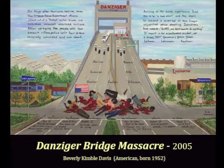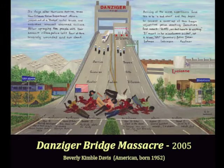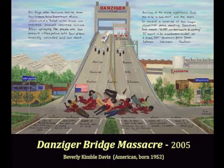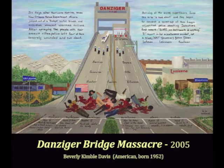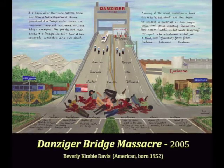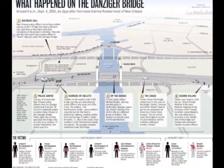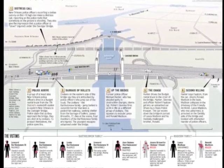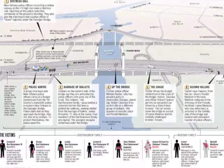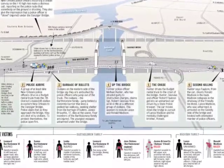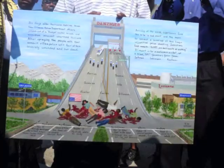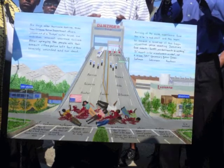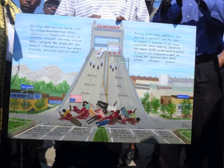This incredible painting by New Orleans artist Beverly Kimball Davis is titled The Danziger Bridge Massacre. It depicts a police shooting that took place six days after Hurricane Katrina struck New Orleans in 2005. Members of the city's police department killed two unarmed people and wounded four others, then fabricated a cover-up to conceal their crimes. On August 5, 2011, a New Orleans federal court convicted five police officers on charges relating to the cover-up. This painting stands as a testament to the 1,833 people who lost their lives in the wake of yet another dark moment in American history.